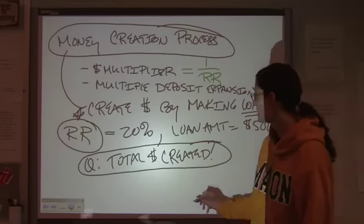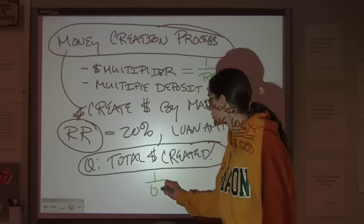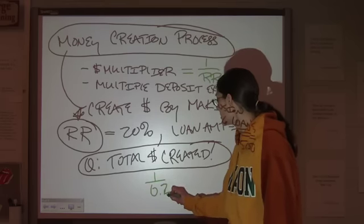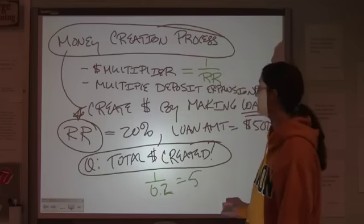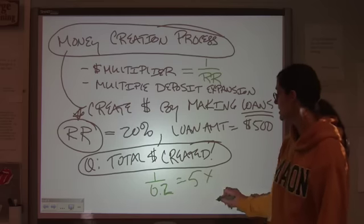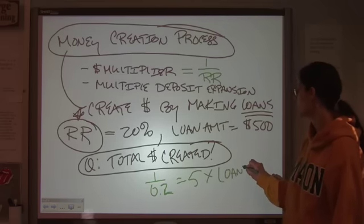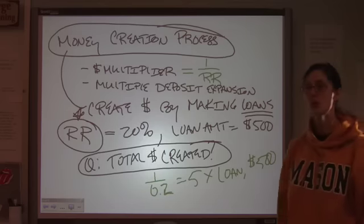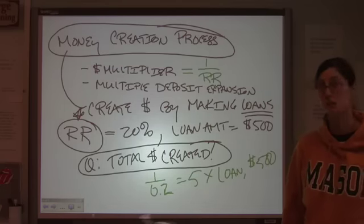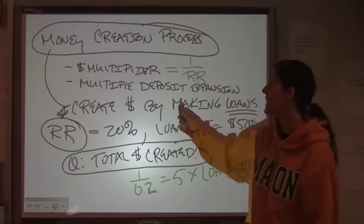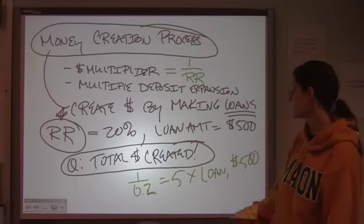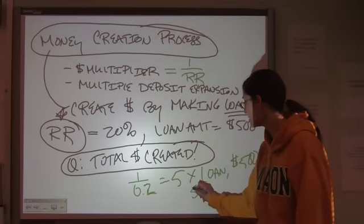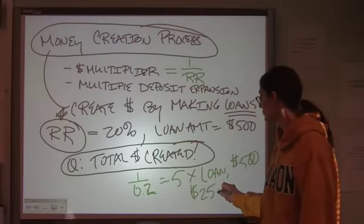In this case, 20%, 1 over 0.2 equals 5 times the amount of the loan, which was $500. So, what's the total amount of money created in the system by a $500 loan? If you have 20% required reserves, 5 times 500, $2,500.